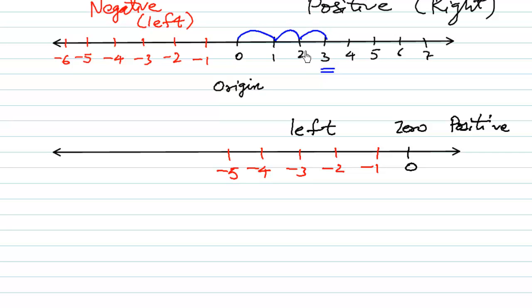And similarly, minus 3 is 3 steps on the left side of 0. So numbers like minus 3 and 3 are said to be opposite numbers.